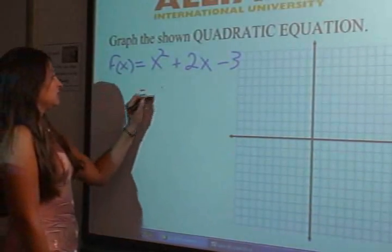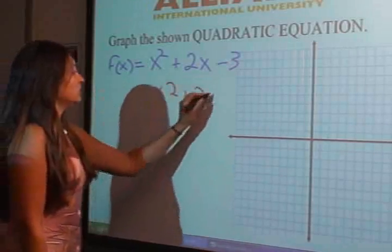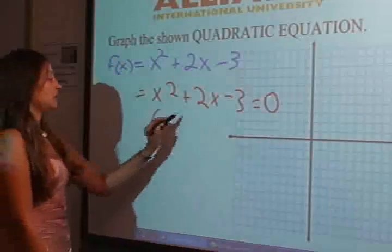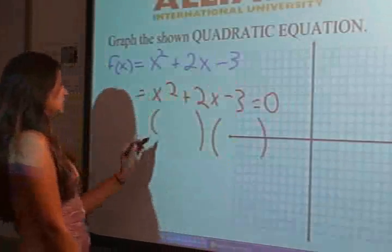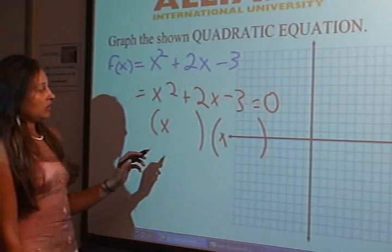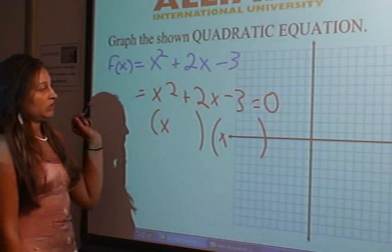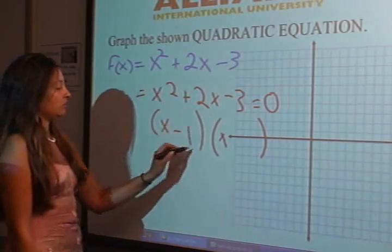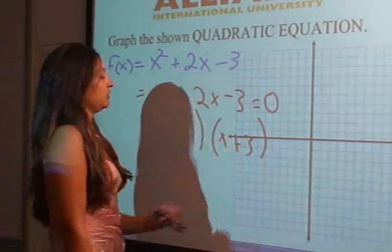Let's do that by writing this as x squared plus 2x minus 3 equals 0. Let's factor that out by doing our little parachute pants. We're going to put x here, x here. It looks like we need something to multiply to give us negative 3, add to give us positive 2. Negative 1 and positive 3 works for me.